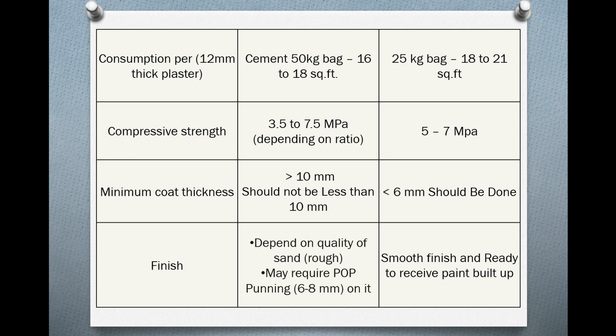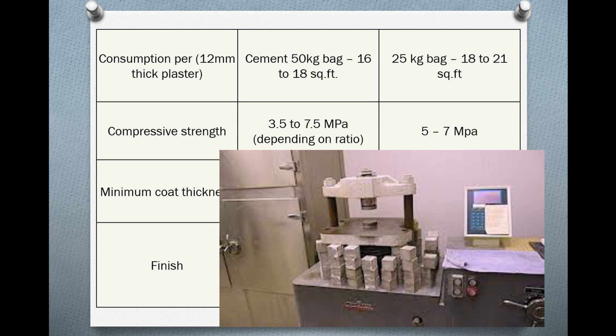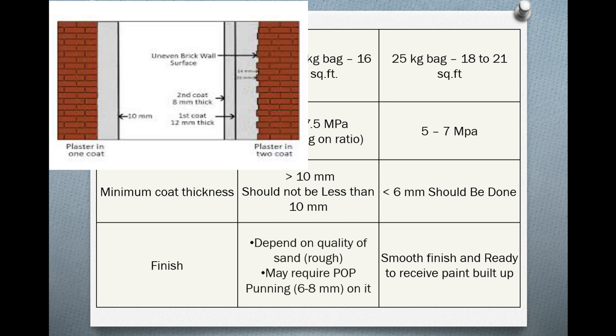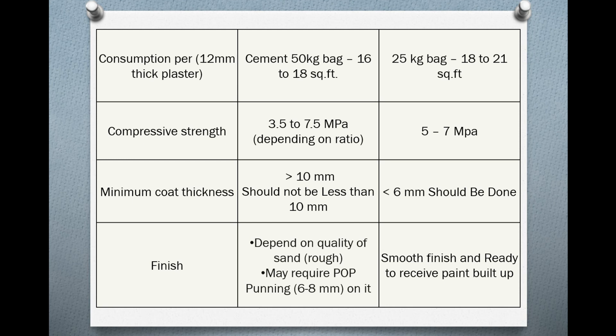Next is compressive strength. The compressive strength value for cement plaster ranges from 3 to 7 MPa, with a typical range of 5 to 7 MPa. Regarding minimum thickness, cement plaster requires a minimum thickness of 10 mm or above. Gypsum plaster can be applied in thinner coats, down to 6 mm or less.